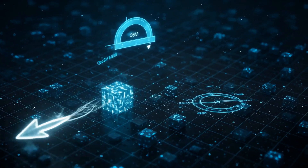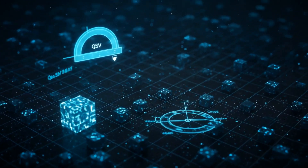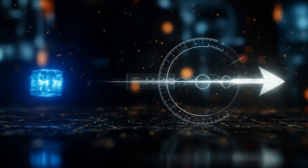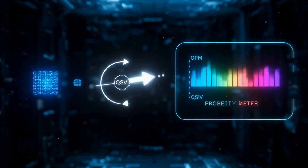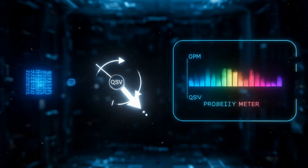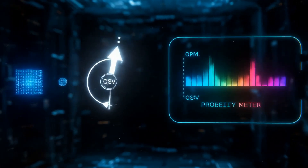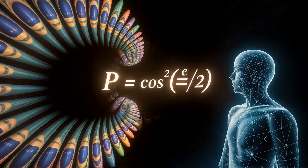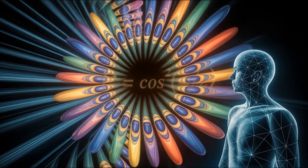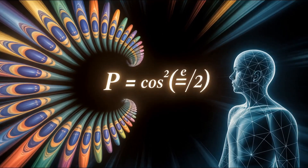A qubit measures this spin by its alignment. The angle between the qubit and the QSV, called theta, determines the probability of detection. If the QSV points straight at the qubit, the probability is one. If it is perpendicular, the probability is zero. This is expressed in the equation p equals cosine squared of theta over two. This is not merely the Born rule — this is the geometry of truth itself.